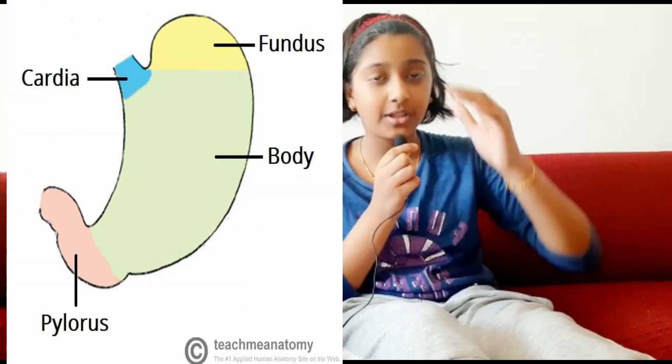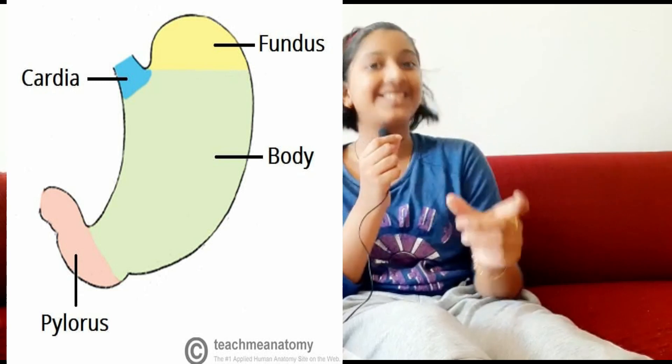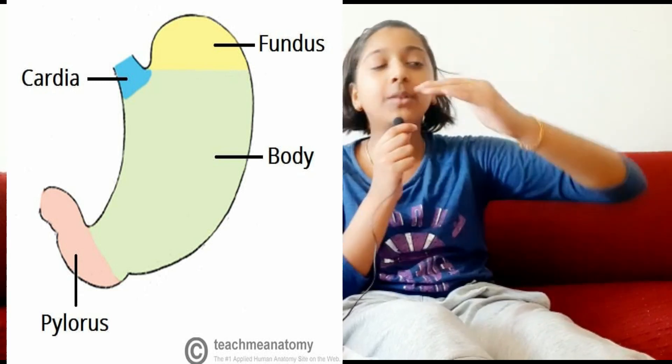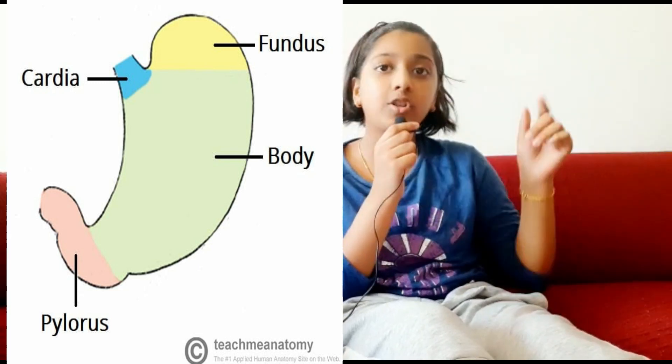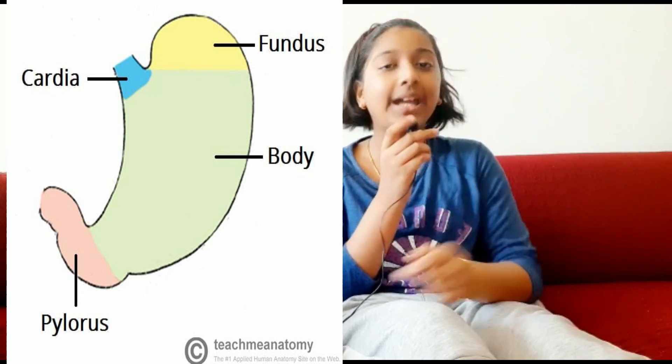The stomach has three parts: the fundus, which is the upper part; the body, which is the middle part; and the antrum, also called the pylorus, which is the lower part. At the antrum or pylorus, food reaches a thick consistency and then leaves the stomach to enter the small intestine.